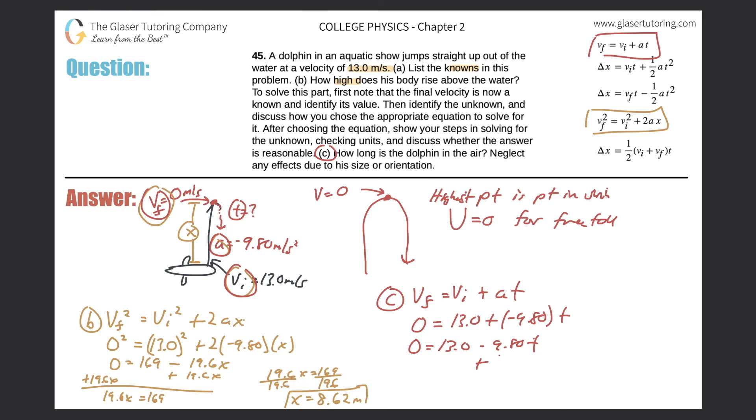So let's clean it up: 13.0 minus 9.80t. Add the 9.80 to both sides, and that's t. So that cancels. So now this gives me 9.80t is equal to 13.0. Divide out that 9.80. Now divide out the 9.80.